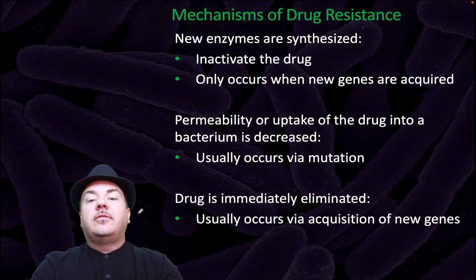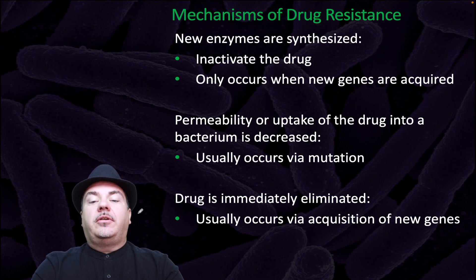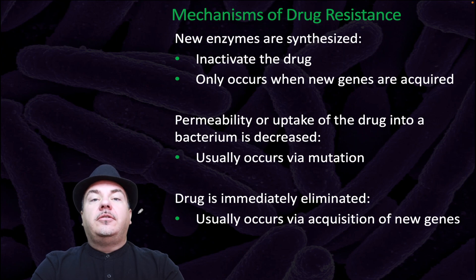What are the mechanisms of drug resistance? One way is that new enzymes can be synthesized. These enzymes can inactivate the drug, and this only occurs when new genes are acquired. Another method is to decrease the permeability or uptake of the drug into the bacteria, which usually occurs through mutation, or a drug can be immediately eliminated, which usually occurs via acquisition of new genes.